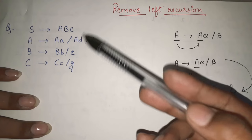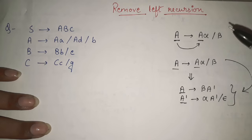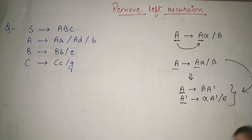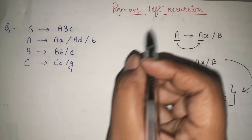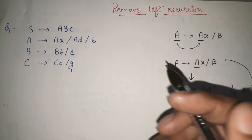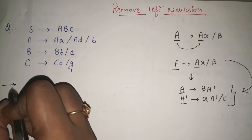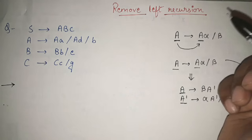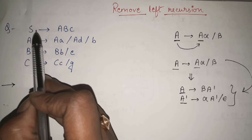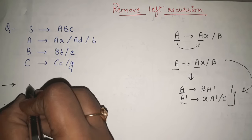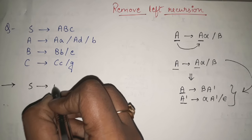Simply, in case of any grammar, if left recursion is present, we will apply this formula and remove the left recursion. Now, with the help of this example, let us see how we will apply this formula. To remove the left recursion, first of all we have to detect in how many places left recursion is present. Wherever there is no left recursion, we will simply keep the production as it is. In the first production, S gives ABC — there is no left recursion, S is not calling itself — so I will simply copy that production as it is.